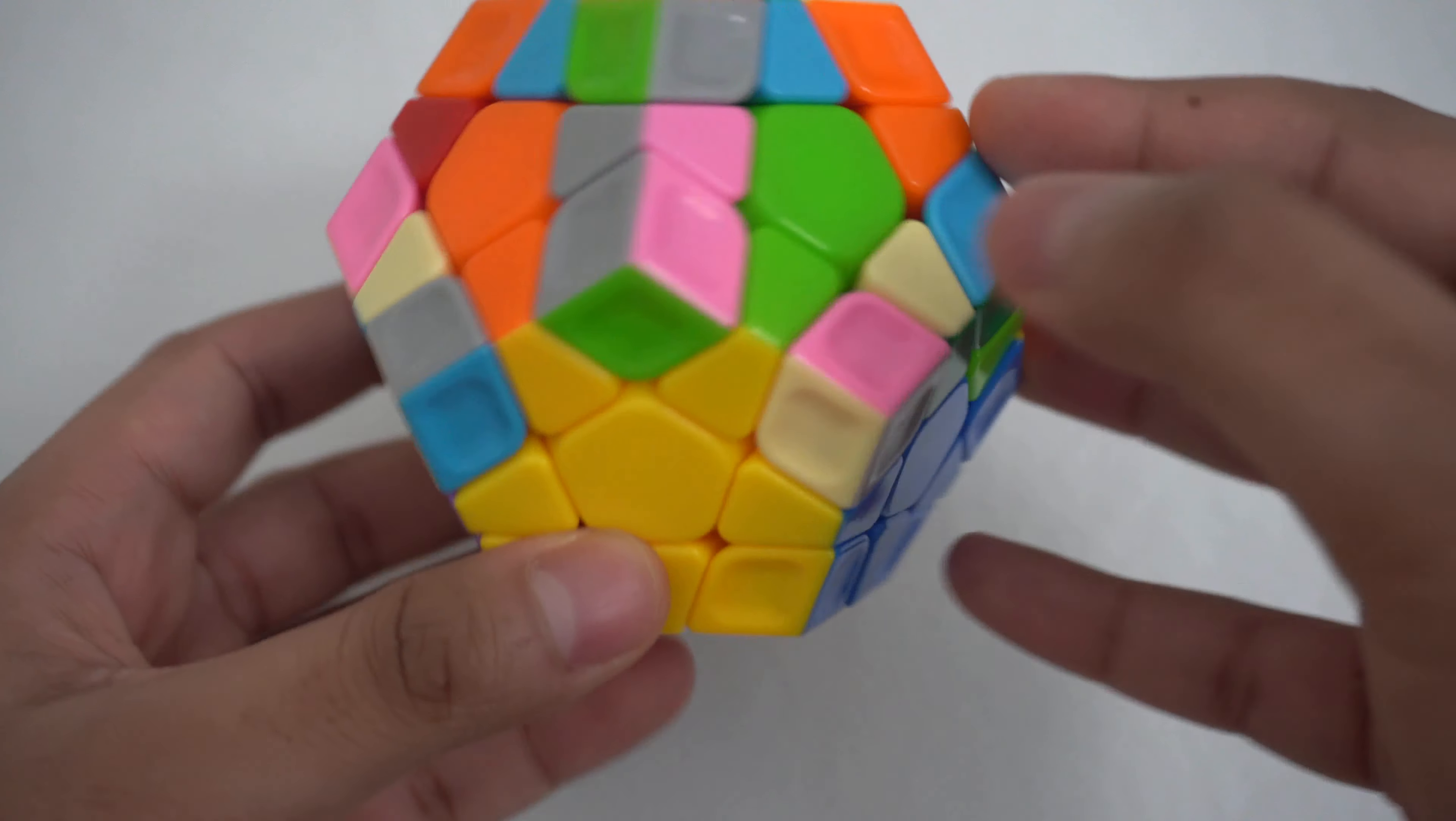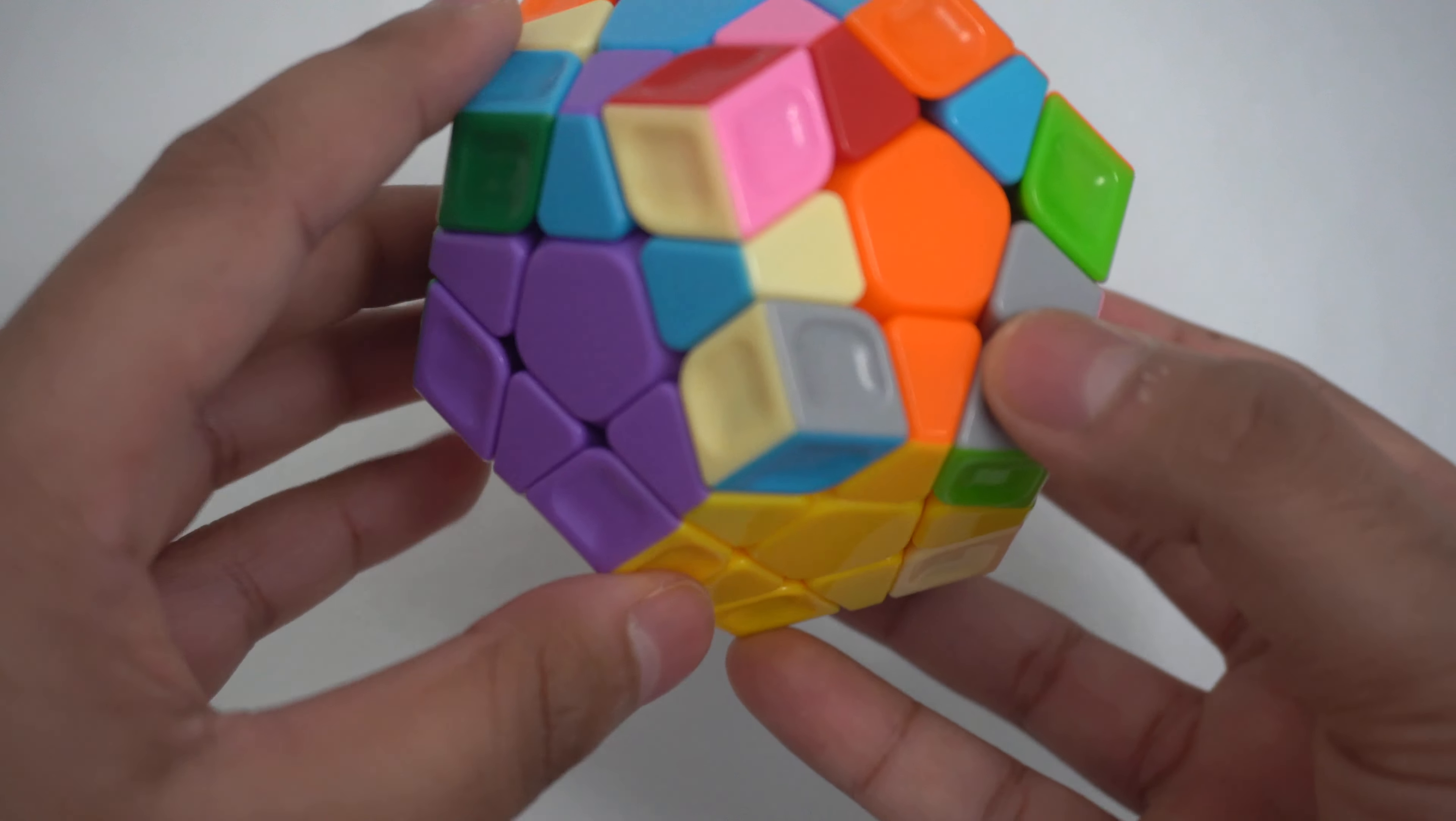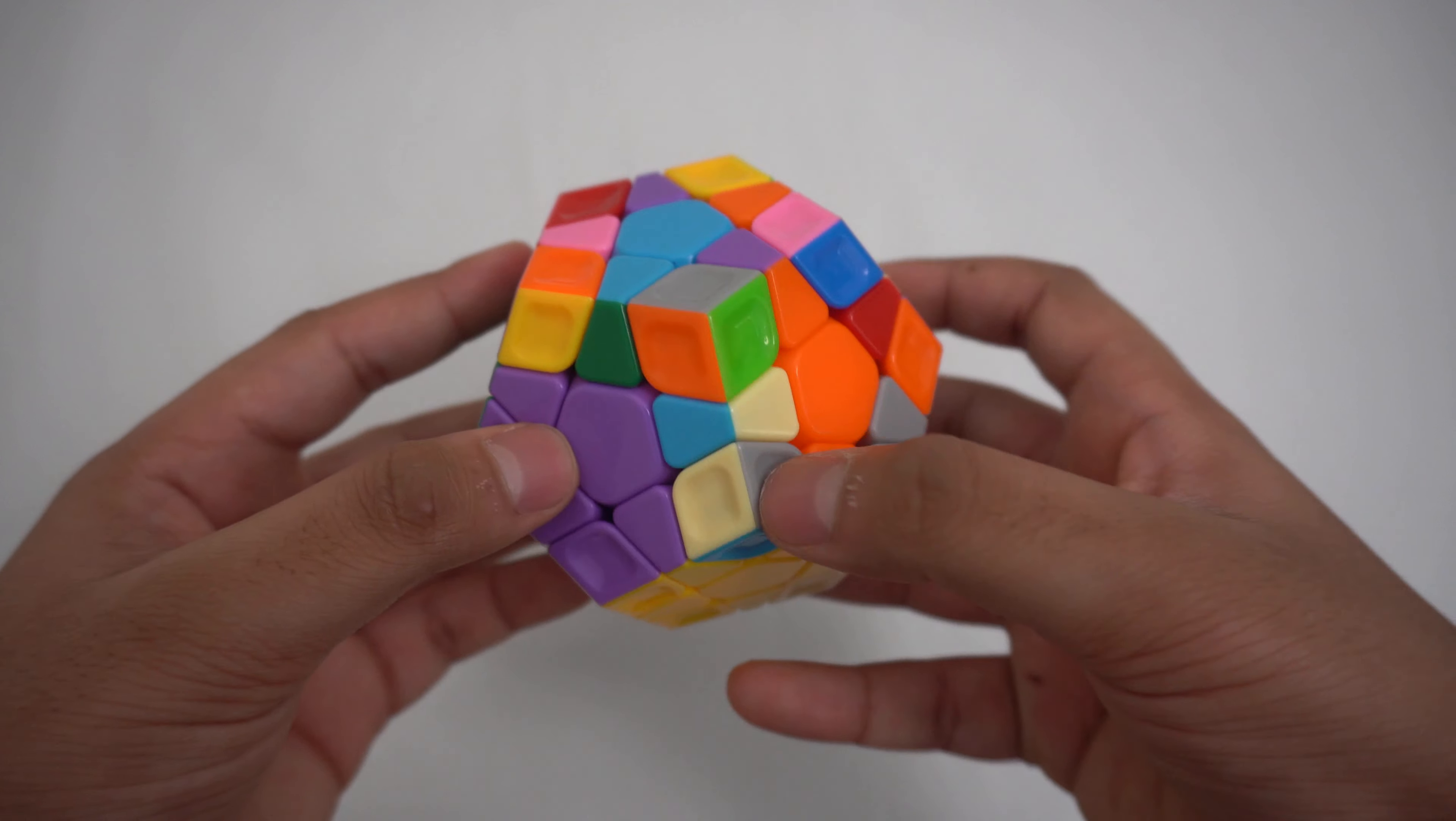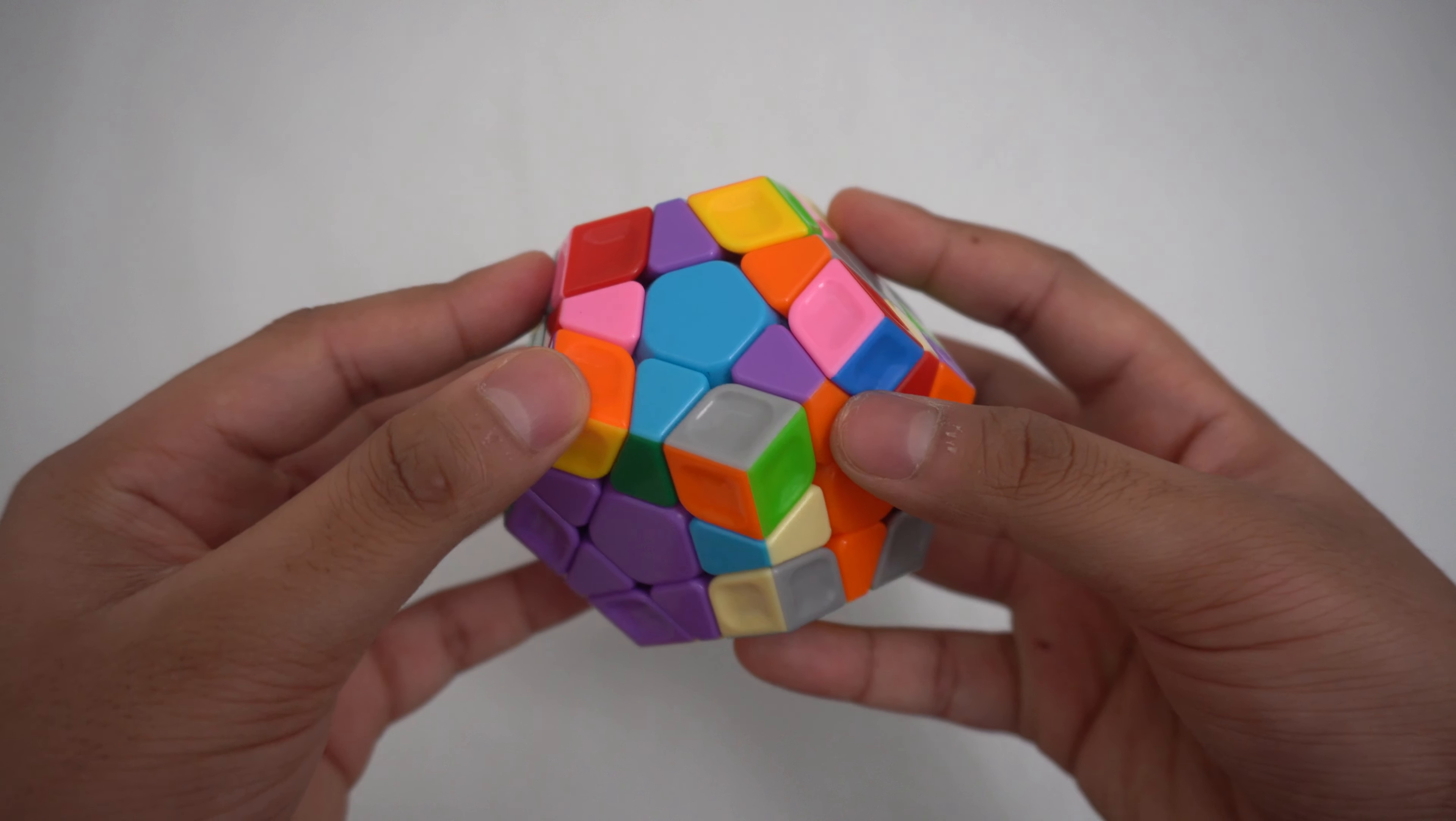After doing that, you have essentially made more F2L slots that you could work on. For the yellow, purple, and orange pair, I have my corner piece and edge piece all up here.